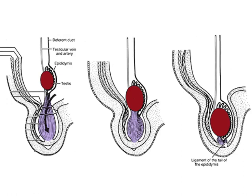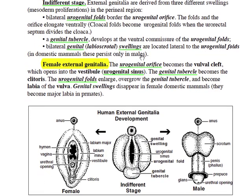Three features of the embryonic perineum develop into external genitalia in both genders. Bilaterally, urogenital folds border the opening into the urogenital sinus at its caudal end. A genital tubercle grows at the ventral juncture of the two urogenital folds, and bilaterally, urogenital swellings appear lateral to the urogenital folds. In females, the urogenital sinus gives rise to the vestibule, and its caudal orifice becomes the vulva cleft. The urogenital folds become the labia of the vulva. The genital swellings disappear in domestic animals, but in women they develop into labia majora. The genital tubercle becomes the clitoris.